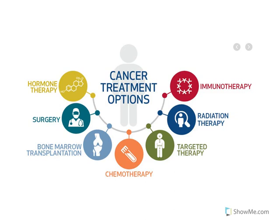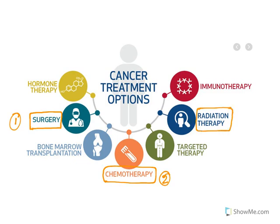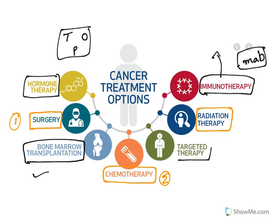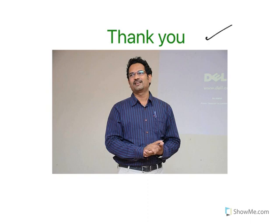The treatment options: if there is a possibility to remove the tumor, surgery is the first option. After that, cancer is treated with chemicals — known as chemotherapy. Then radiation is given to eliminate any surviving cancer cells. For bone marrow cancer, bone marrow transplantation is an option. For testicular, ovarian, and prostate cancers which are hormone-driven, hormonal therapy is given. Immunotherapy enhances immunity so it attacks cancer cells — monoclonal antibodies ending in -mab are part of immunotherapy. Targeted therapy is given for particular types of cancer.